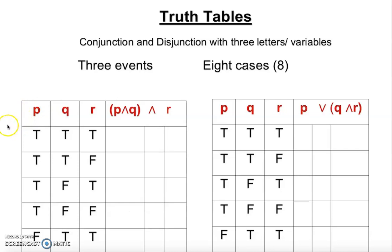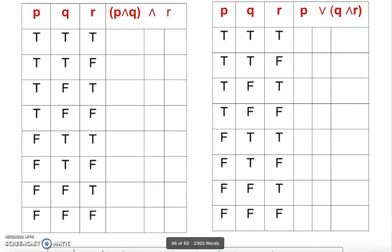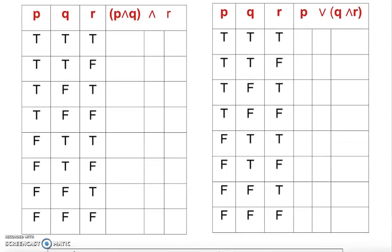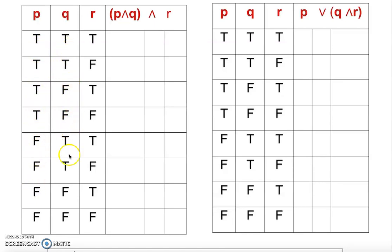Now what are the eight cases? So eight cases: for the first variable we have four true and four false. For the second variable we have two true, two false, two true, two false. And for the third variable we alternate: true, false, true, false, true, false, true, false.